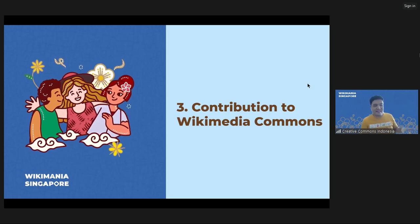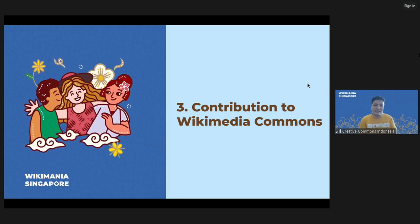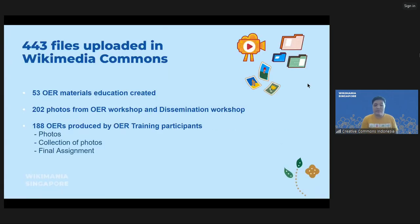Hello everyone, I'm Raymond. Today I'm going to tell you about how many files the Adichita project contributed to Wikimedia Commons. So far, about 443 files have been uploaded to Wikimedia Commons — 53 files of them are communication materials that we created, including booklets, illustrations, and infographics used on social media, and also videos created for the OER training. The second category is about 200 photos uploaded from our workshop participants and the dissemination workshop.